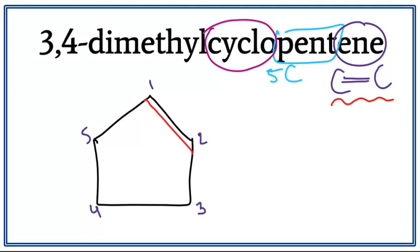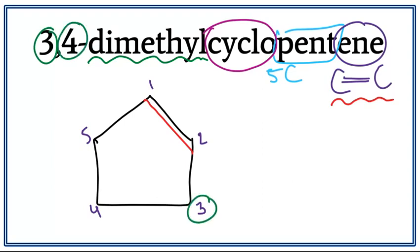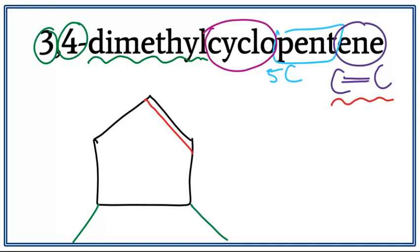Now we need to attach the dimethyl. Dimethyl means that there are two methyl groups attached to the cyclopentene — one on the third carbon and one on the fourth carbon. So we attach a methyl on the third carbon and a methyl on the fourth carbon. This is the structure for 3,4-dimethylcyclopentene.